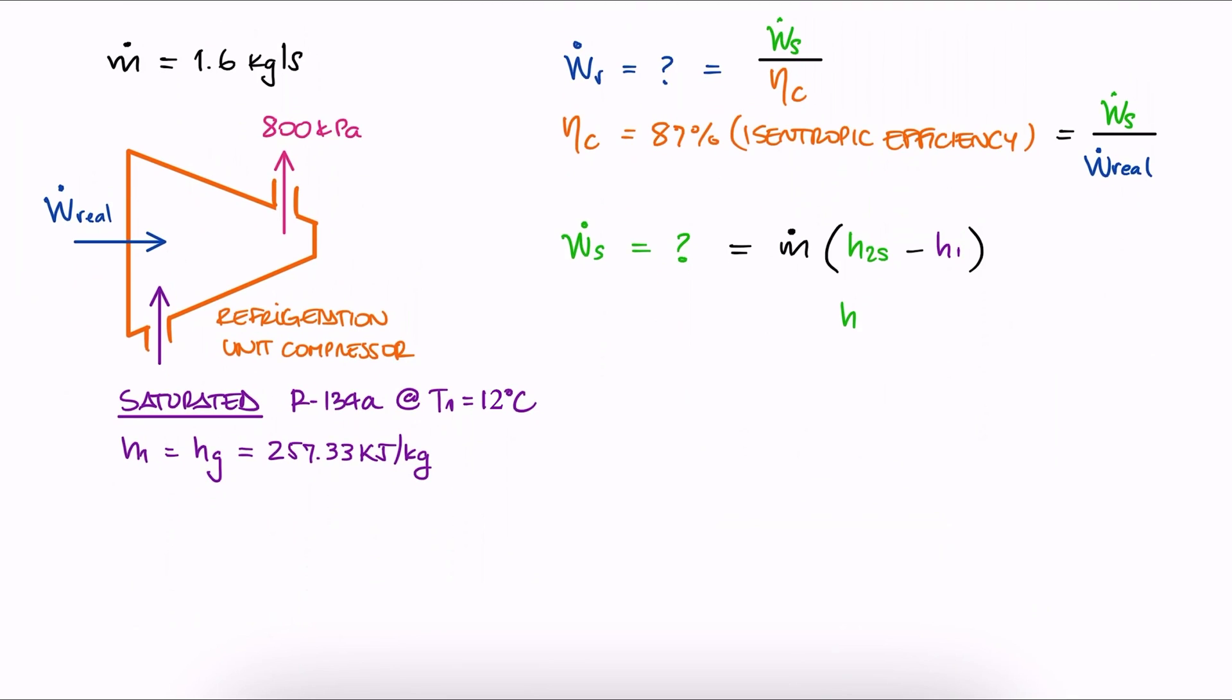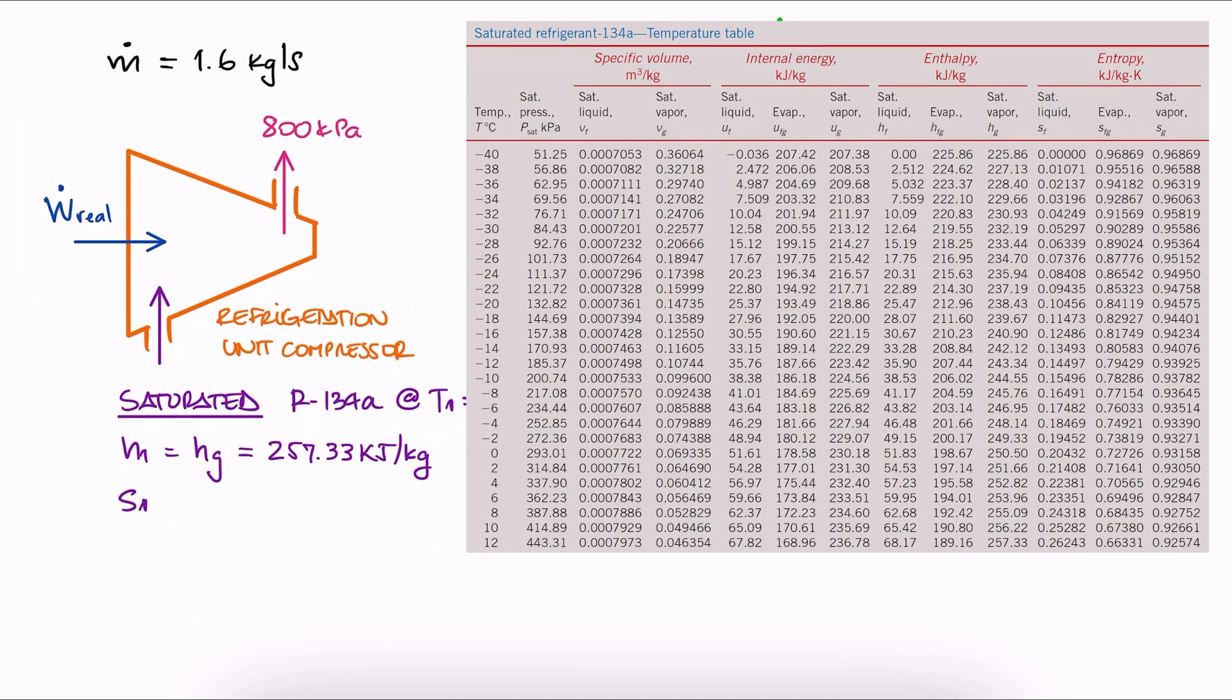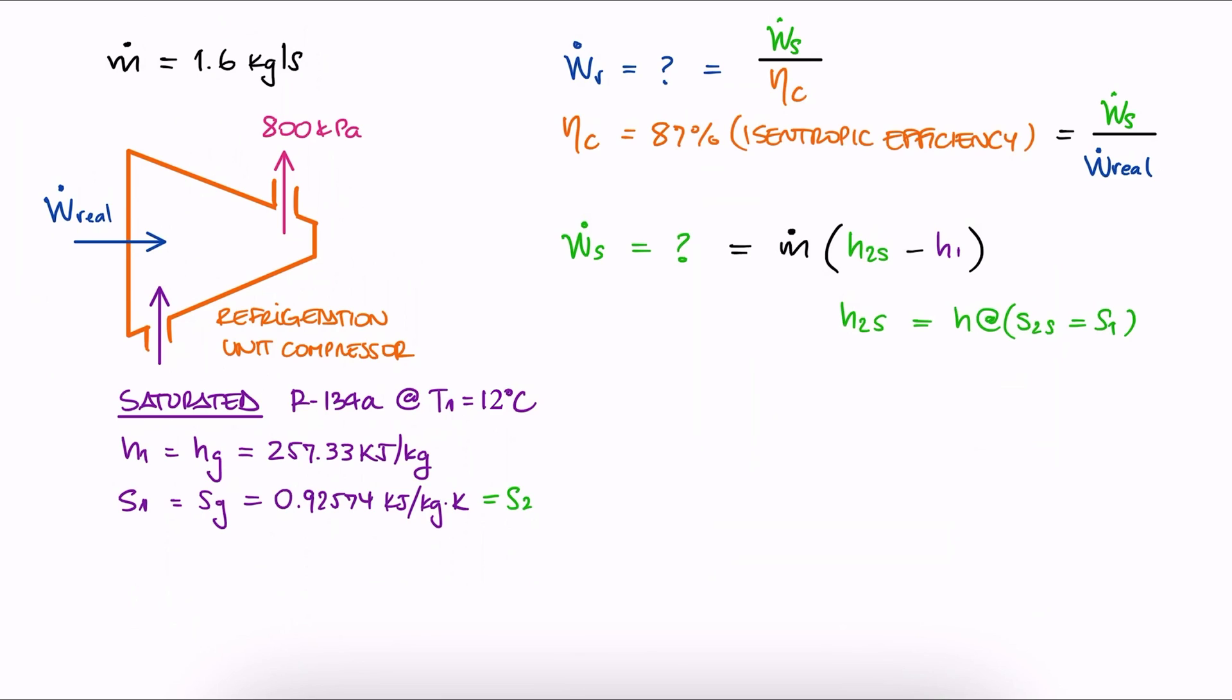As for H2S, we can find the corresponding H2 for S2. And since we are finding the isentropic values, S2 is equal to S1. From that same table just now, S1 is SG for temperature 1. This means that S2S is that value.